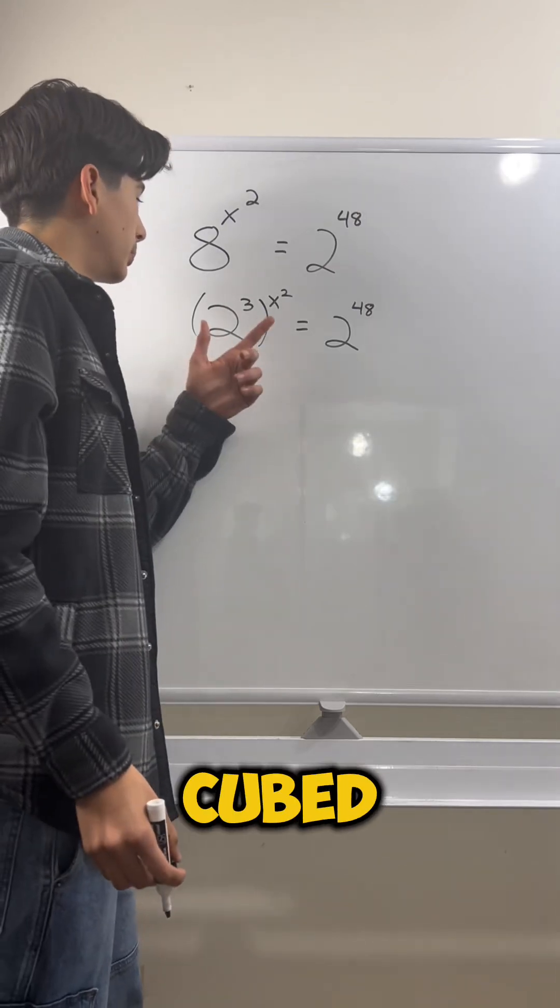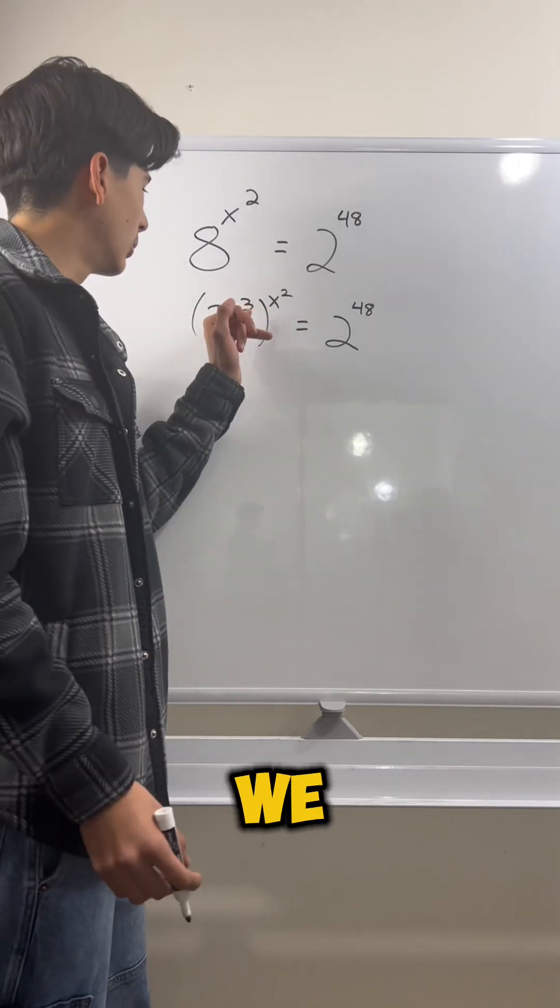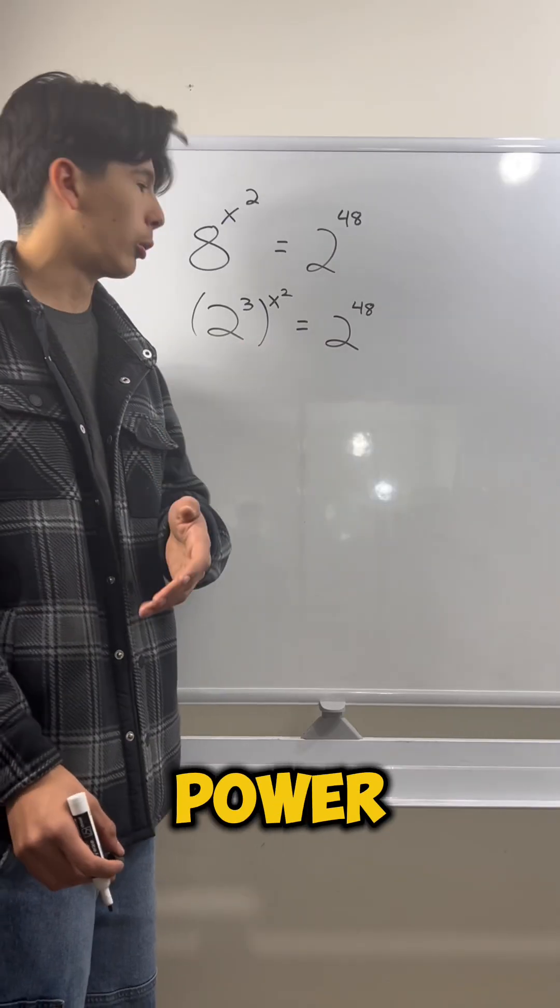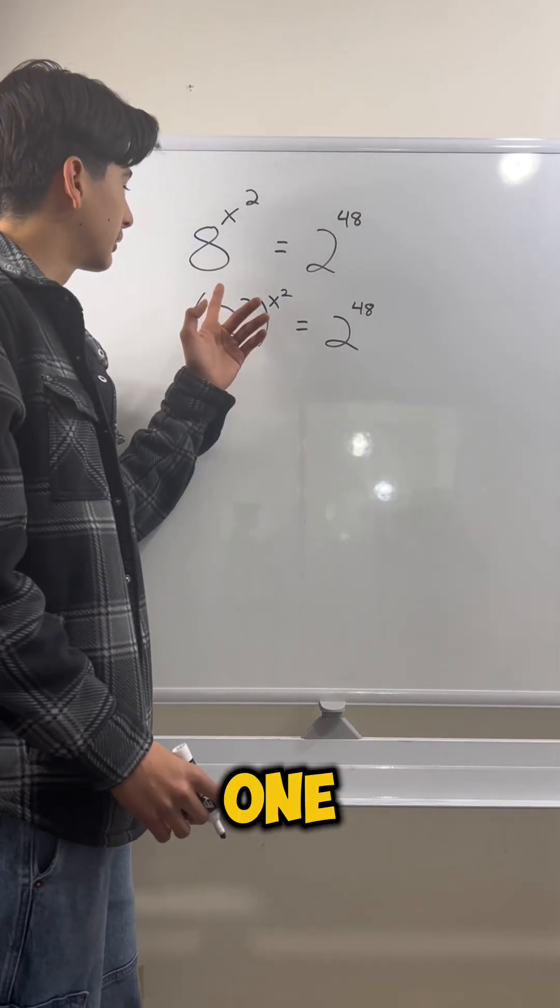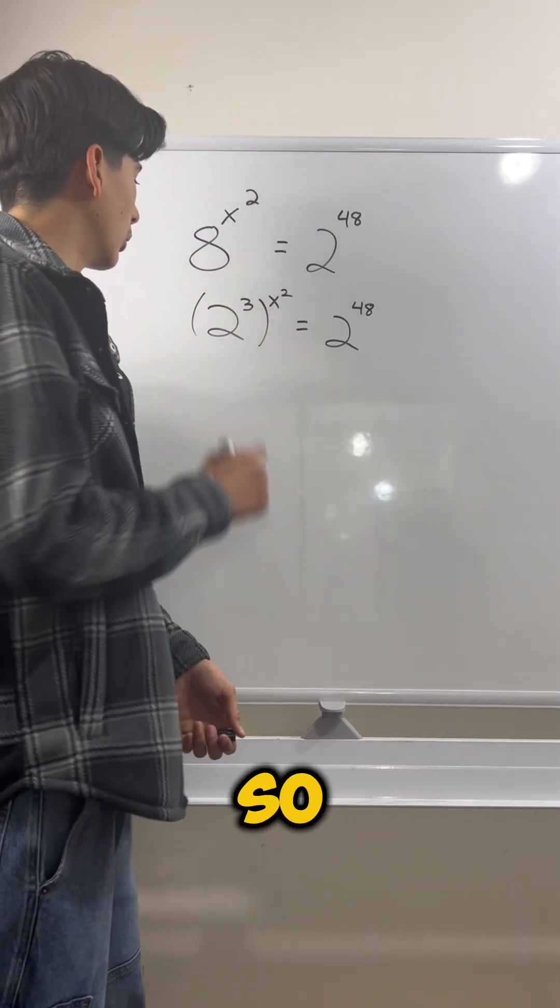All right, so now we have 2 cubed to the x squared. Now, what can we do with this thing? Well, if you remember our power rules, we could just multiply these two exponents because it's one of our index rules. So let's just do that.